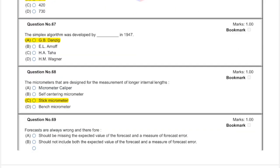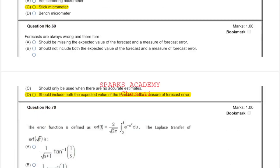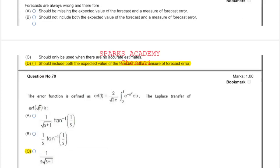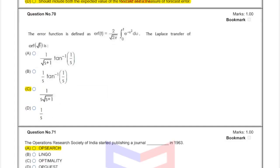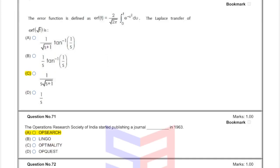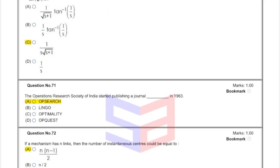Question 68: the answer is stick micrometer — used for measuring longer internal lengths. Question 69: option D — the forecast should include both the expected value of the forecast and a measure of forecast error. Question 70: option C — 1 divided by s(s+1). Question 71: the Operations Research Society of India started publishing the journal OR Search in 1963 — answer option A.